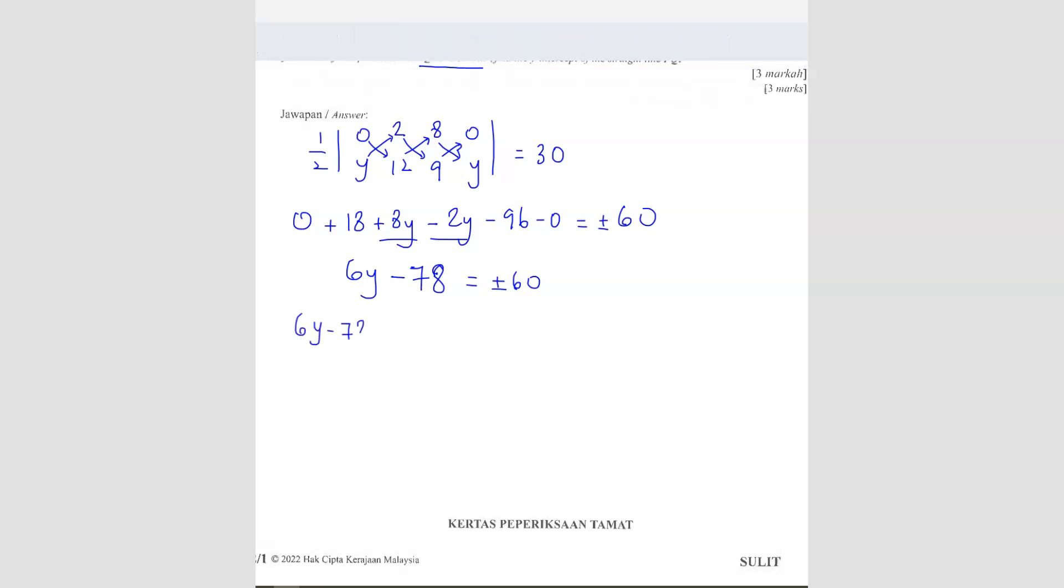First answer is 6Y minus 78 equals to 60. The second one will be 6Y minus 78 equals to negative 60. So 6Y will be equals to 60 plus 78, that's 138. Y equals to 138 divided by 6, I will get 23. And here, you get negative 60 plus 78, I should get 18. So Y equals to 3.